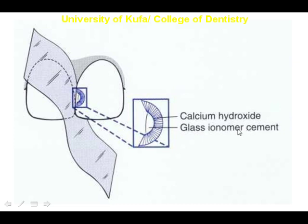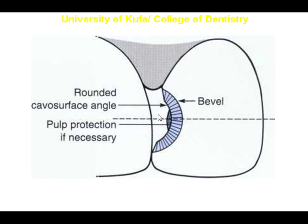The glass ionomer cement will aid in the etching process, as after etching it will be pitted or irregular, therefore aiding in the mechanical attachment of the restoration to the cavity. Here is the final cavity. As you can see, the beveling and rounded cavity surface line angles are present. The small cavity reflects the minimal thickness of the anterior teeth.